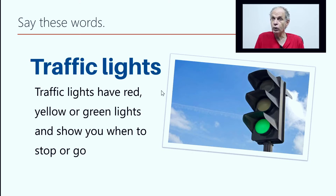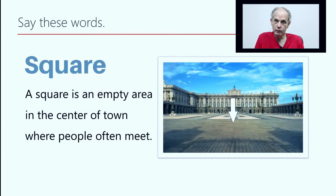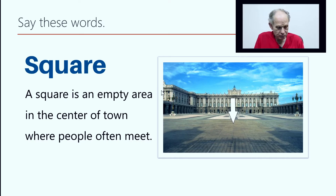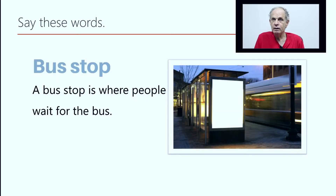Traffic lights have red, yellow, or green lights and show you when to stop or go. A square is an empty area in the center of town where people often meet. A bus stop is where people wait for the bus.